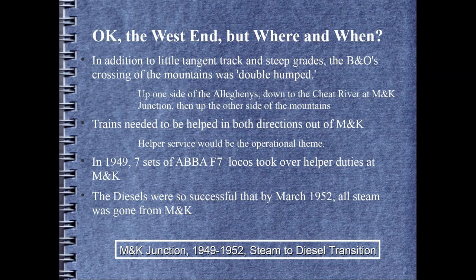In crossing the Allegheny Mountains, the B&O went up one side of the mountains, across a tableland, and down the other side to the Cheat River. From the valley of the Cheat, the railroad went up the short but equally steep Cheat River grade, tunneled under the second summit at Tunnelton, then made the final descent into Grafton. Trains needed to be helped in both directions out of MNK Junction at the Cheat River. Helper service would provide the operational theme of the model railroad, given the prototype lack of industries. That fixed the place on the West End — MNK Junction — with the three-track Cranberry grade to the east and the two-track Cheat River grade leading to the west. In 1949, seven sets of EM-AB F-7 diesels took over helper duties at MNK Junction. Steam is the road power and diesels are the helpers. However, the diesels were so successful that by March 1952, all steam was gone at MNK. That fixes our place and time: MNK Junction, 1949–1952, the steam-to-diesel transition.